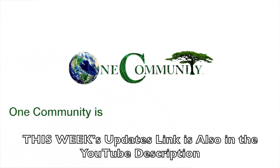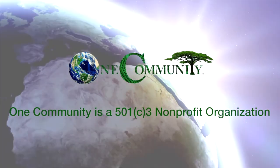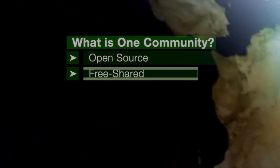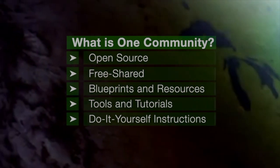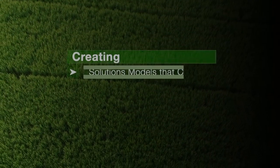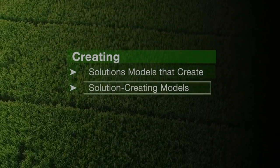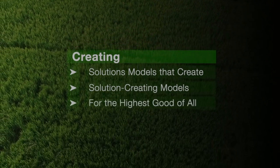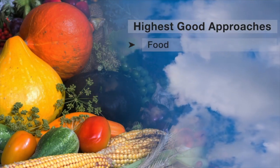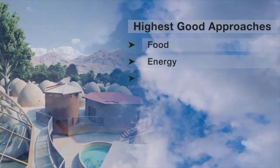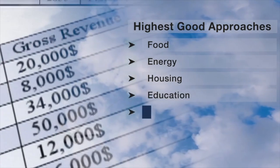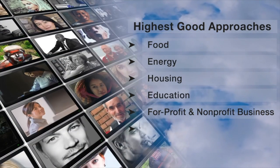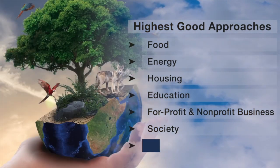One Community is a 501c3 non-profit organization. We are creating open source and free shared blueprints and resources, tools and tutorials, and do-it-yourself instructions for highest good living — creating solution models that create additional solution-creating models in the service of all life on this planet. This includes highest good approaches to food, energy, housing, education, for-profit and non-profit business creation, society, and true earth stewardship.